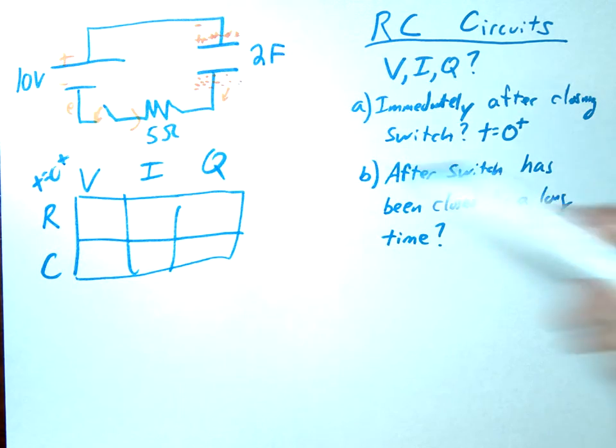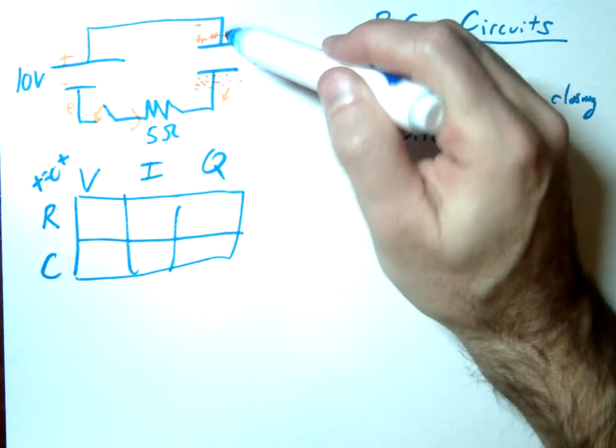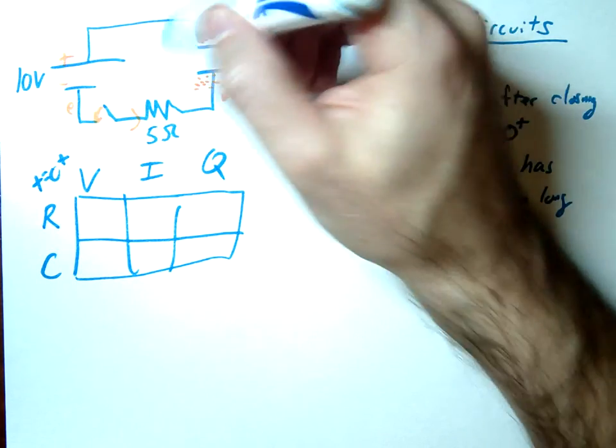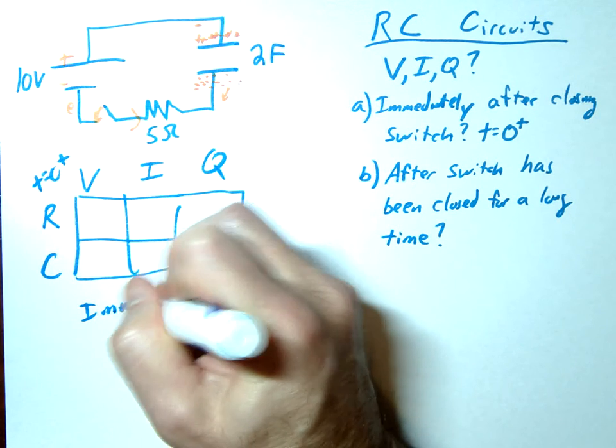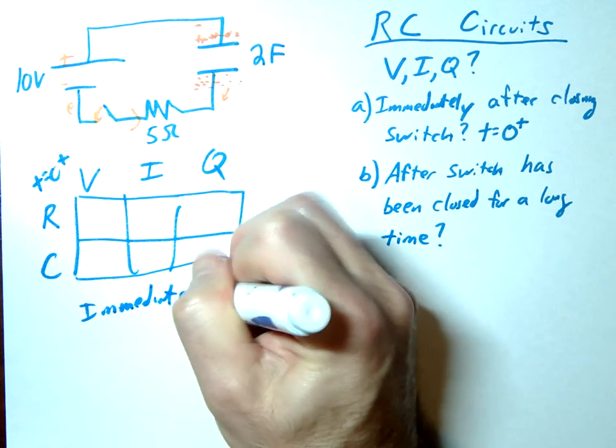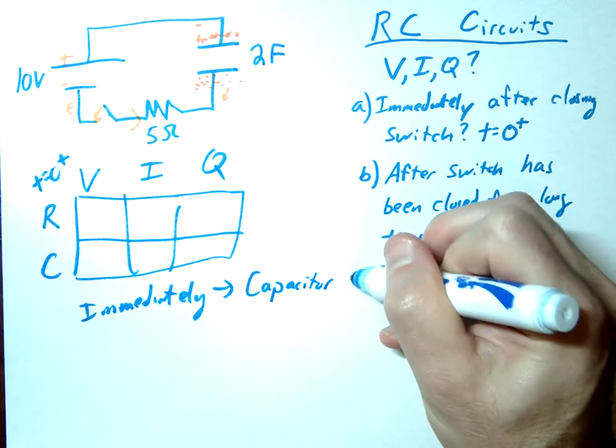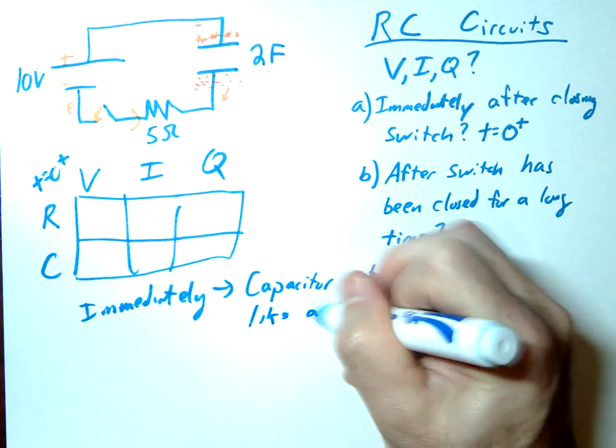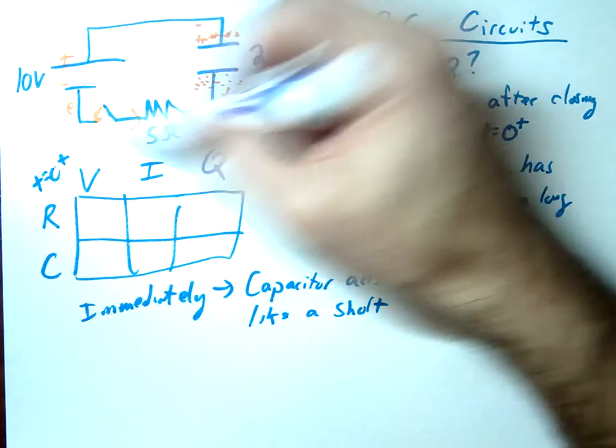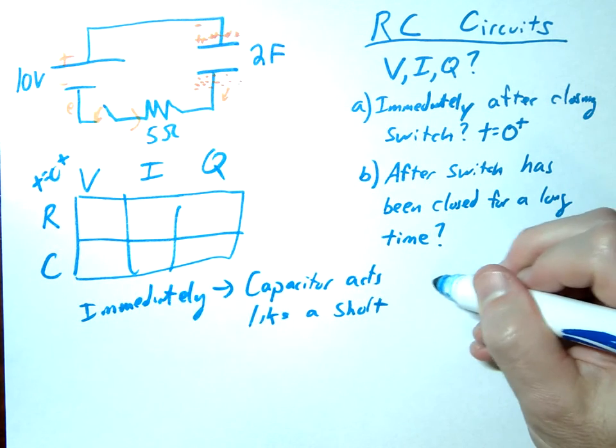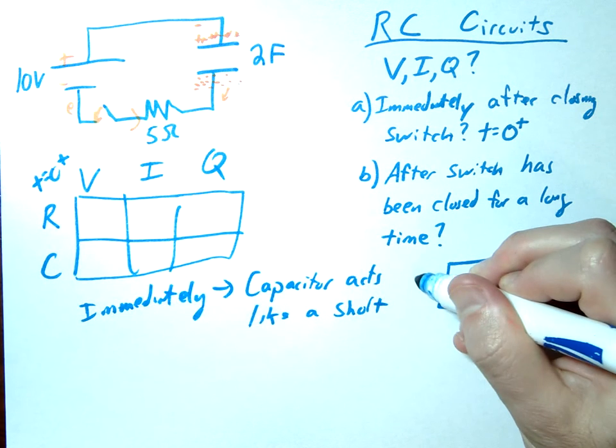What I want you to notice is, as soon as we close this circuit, there's going to be a huge flow of charge. In fact, what we're going to do is we're going to treat this capacitor as if, so immediately we're going to treat it as if it was a short circuit. In other words, there's going to be a massive flow of charge here. In other words, our circuit would look like this. One resistor, one voltage.